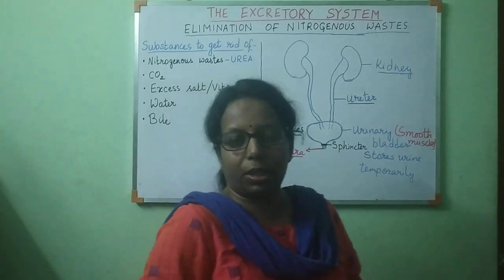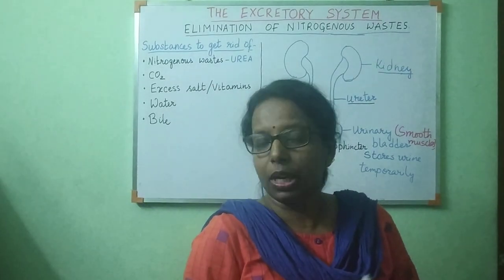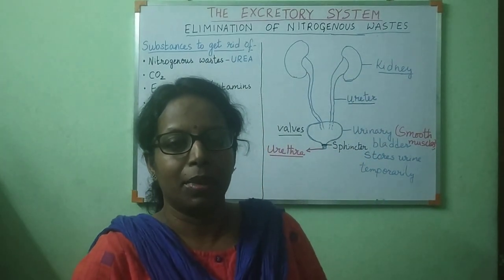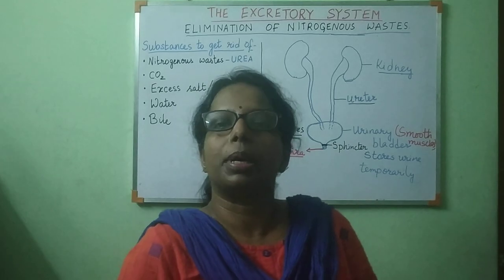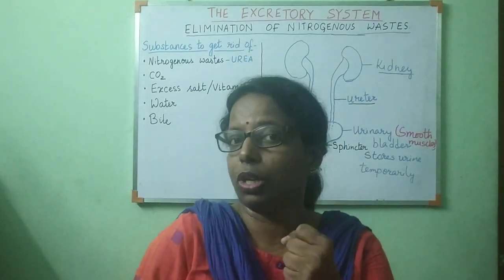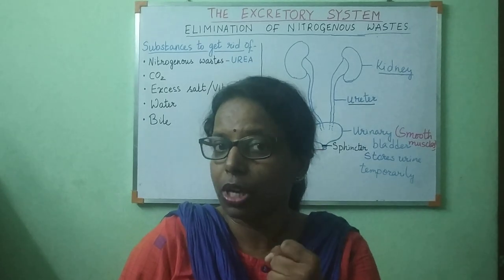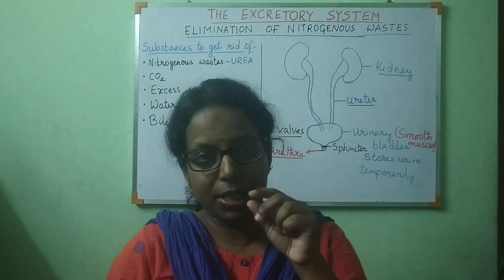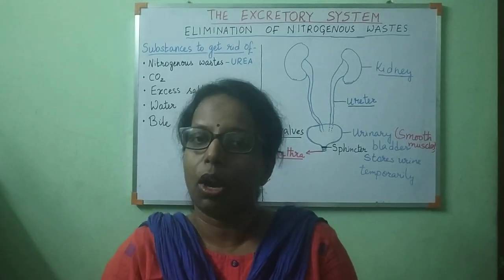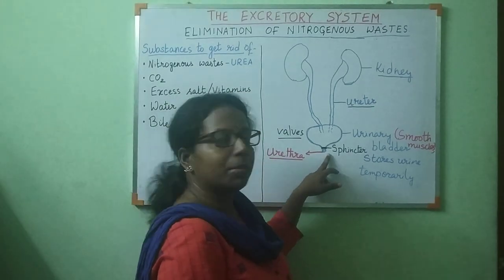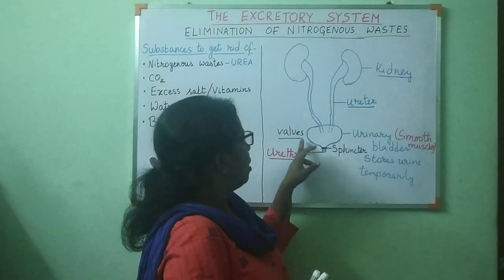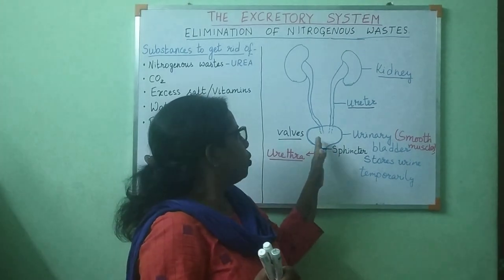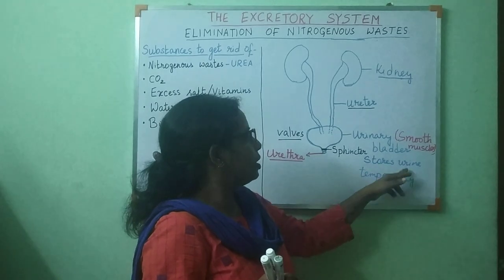These sphincter muscles remain contracted under normal conditions. When they are contracted, urine does not flow out of the urinary bladder — it's like a tap that is closed. So when the sphincter muscles are contracted, the smooth muscles of the urinary bladder are relaxed, and urine is stored temporarily.